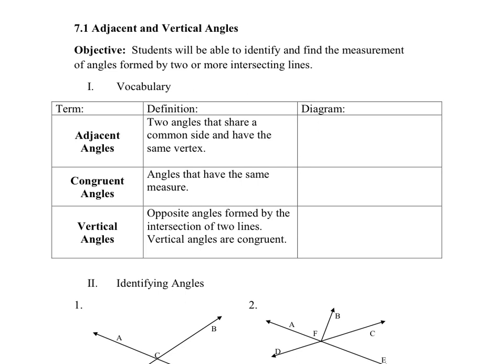Vertical angles are two angles that are crossed from each other by the intersection of two lines and these angles are what are considered congruent.